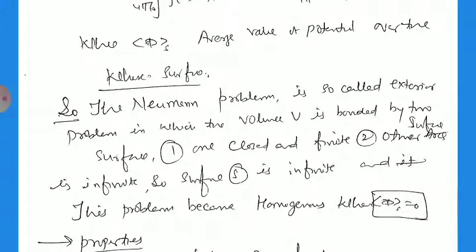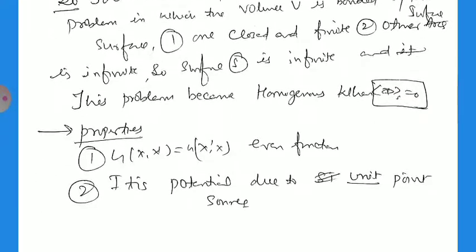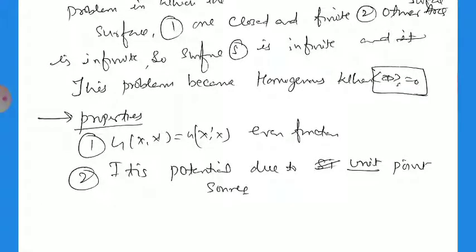The Neumann problem is often an exterior problem where the volume V is bounded by two surfaces — one closed and finite, and another infinite. When S is infinite, the problem becomes well-posed when phi_S equals zero. The Green function has the symmetry property G(x, x') equals G(x', x), making it an even function. It represents the potential due to a unit point charge. These are the key properties of the Green function. This concludes today's section. Thank you.